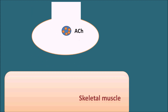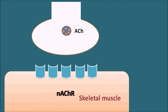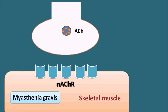At the neuromuscular junction, the skeletal muscle is equipped with nicotinic acetylcholine receptors. In myasthenia gravis, because it is an autoimmune disorder, the body produces antibodies which affect the nicotinic acetylcholine receptors. These antibodies bind to these receptors and thereby desensitize them.